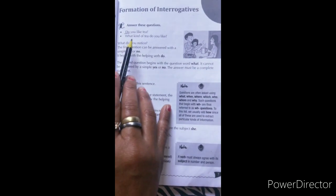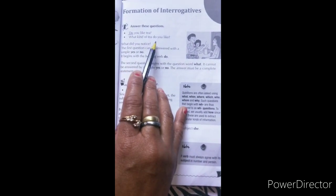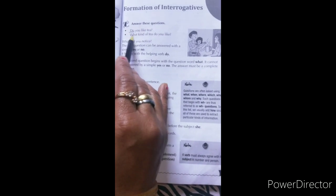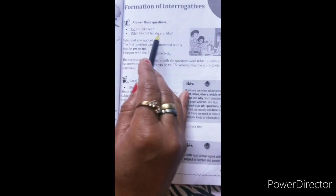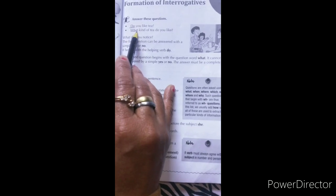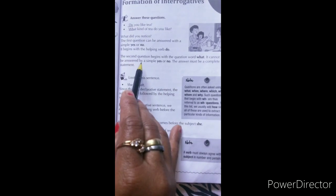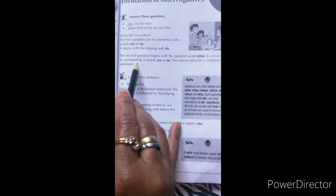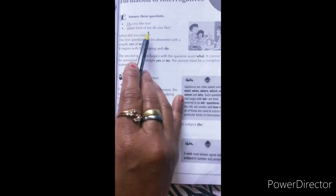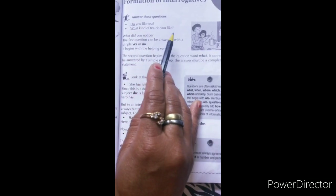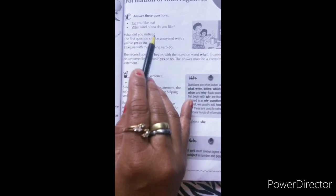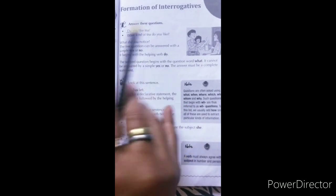If we see the second sentence, it starts with the question word 'what'. Second jo hamara sentence hai, wo start ho raha hai question word 'what' se. And it cannot be answered by a simple yes or no — lekin hum iska answer yes or no mein nahi de sakte. Jab hum iska answer denge, to wo ek poora statement hoga.